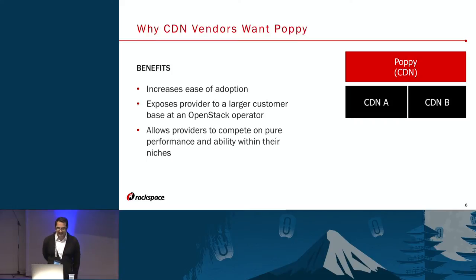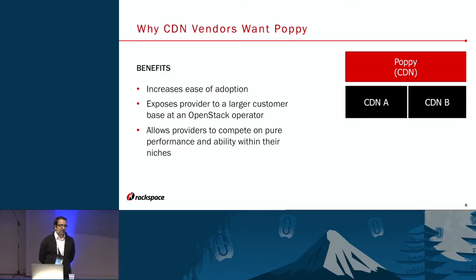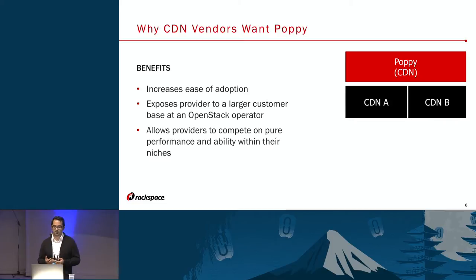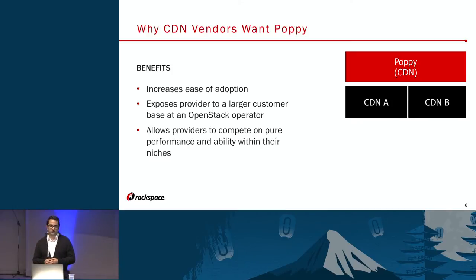Why would a CDN vendor be interested in Poppy when they already run a business and have customers? By integrating in OpenStack Poppy, it increases ease of adoption. If a customer is already using OpenStack, they can start using Poppy, and those vendors have new market share. It exposes a provider to a larger customer base — if an operator adds Poppy to their portfolio, there's a whole new group of customers that may not have gone to that vendor otherwise. And it allows providers to compete on pure performance and ability within their niches: how many edge nodes they have, how fast the edge responds. It's now a performance play, no longer about contracts and cost.